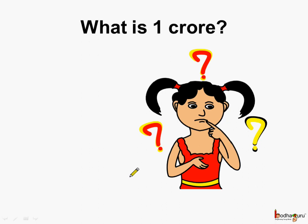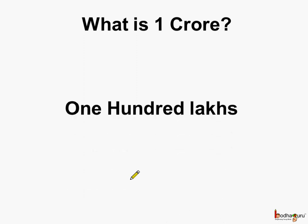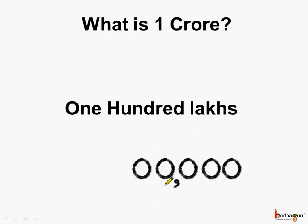Same way, what is 1 crore? It is sometimes difficult to remember how many zeros to put after 1 to make it 1 crore. If we remember that 1 crore means 100 lakhs, it becomes easier. We add 3 zeros to make 1000, then add 2 more zeros to reach the lakhs place, and put 100 there — giving us 100 lakhs, which is 1 crore.